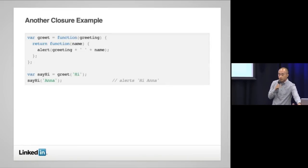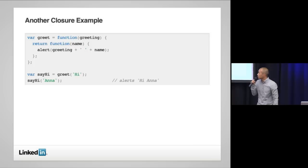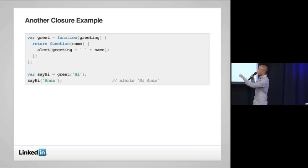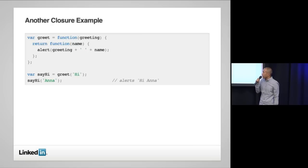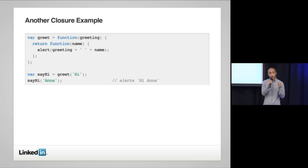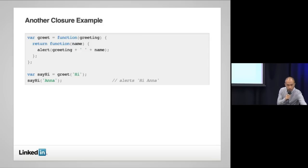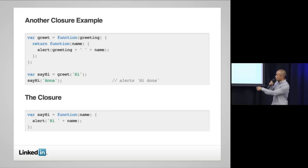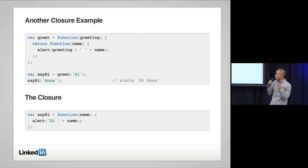Here's a deeper example of closure. We create a function called 'greet' that returns another function. On the line 'var sayHi = greet("hi")', when you invoke greet, it holds the context of the string 'hi' and returns the inner function. Due to closure, sayHi is essentially equal to that inner function with 'hi' bound to it. That's why when you call sayHi('Anna') it alerts 'hi Anna', even though we didn't explicitly pass the string 'hi' into the sayHi call.